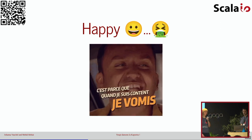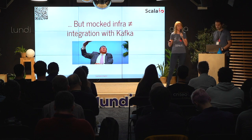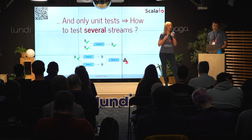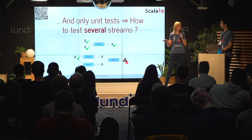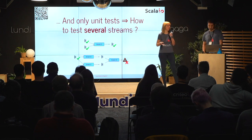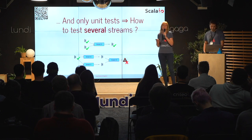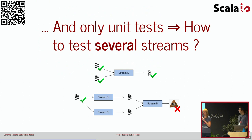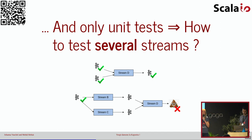Je ne suis pas trop d'accord. Ta solution n'est pas mal, mais elle n'est pas parfaite. Premièrement, on travaille sur une infrastructure moquée — on n'utilise pas la vraie infrastructure avec le cluster Kafka. Donc on ne peut pas vraiment faire des tests d'intégration. En plus, ça permet de tester unitairement chaque stream. Mais comment faire si je veux tester plusieurs streams à la fois ? Quand on met les streams tous ensemble dans une data pipeline, ça ne va pas marcher comme on l'a pensé. Et ce qui serait idéal, c'est de pouvoir tester toute notre pipeline de données — faire des tests end-to-end, de bout en bout.